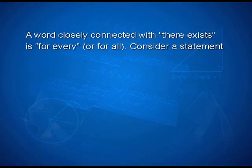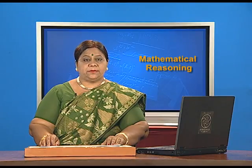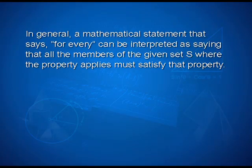Consider a statement P: for every prime number P, the square root of P is an irrational number. This means that if S denotes the set of all prime numbers, then for all members P of the set S, the square root of P is an irrational number. In general, a mathematical statement that says 'for every' can be interpreted as saying that all members of the given set S where the property applies must satisfy that property.